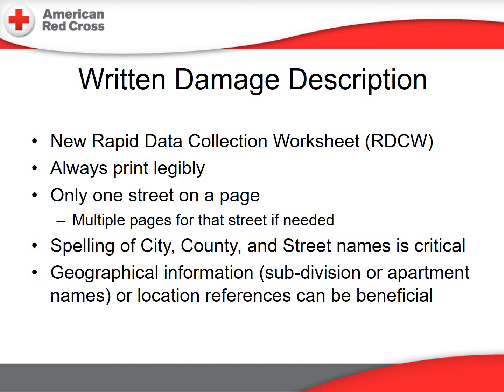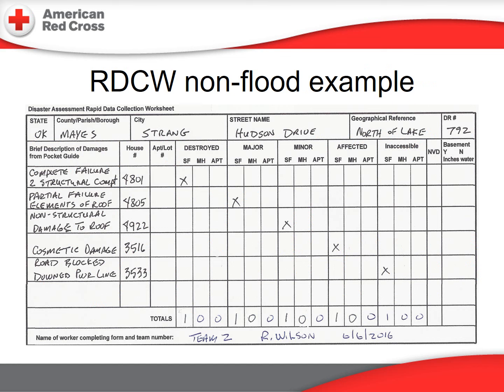Enter a geographical reference if helpful, such as a subdivision or apartment complex name. At the top of the form, enter the state, county, city, street name, geographical reference, and DR number. Then enter the house number you're observing. Take a look at the house, then consult the pocket guide and select the appropriate description that matches what you're seeing.